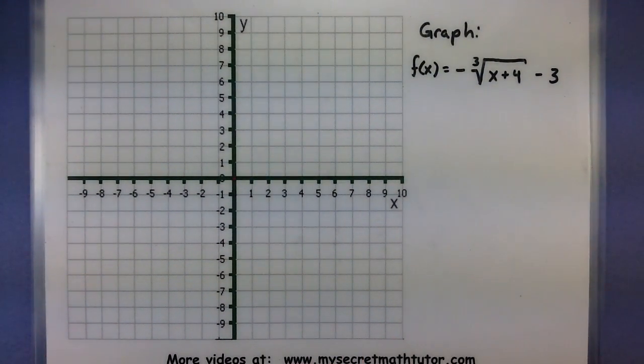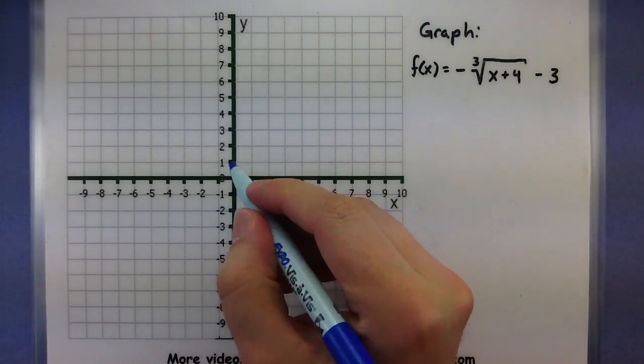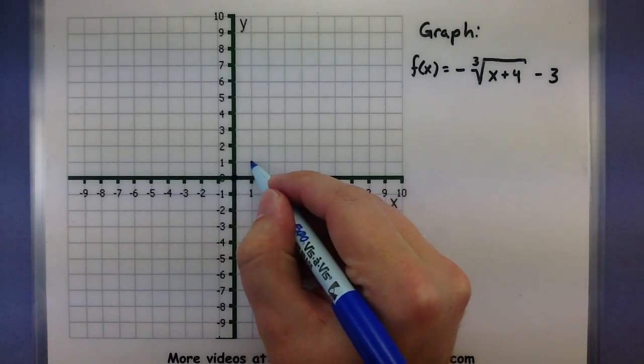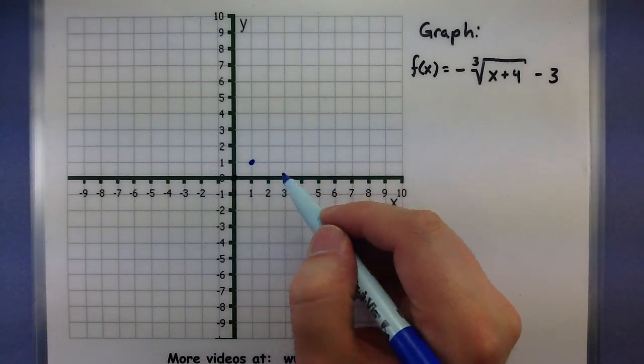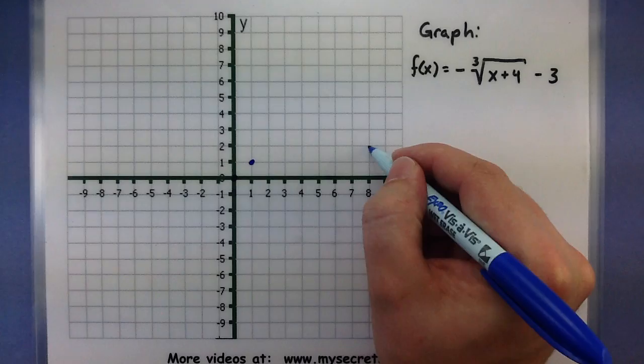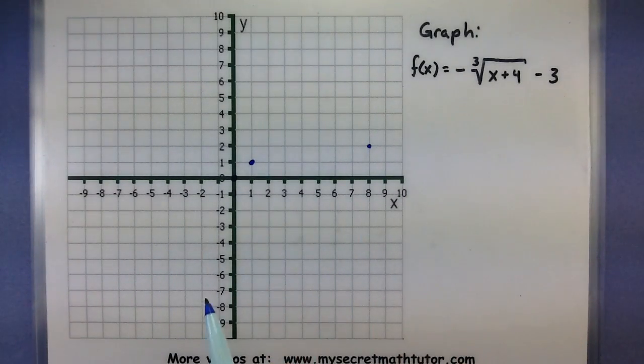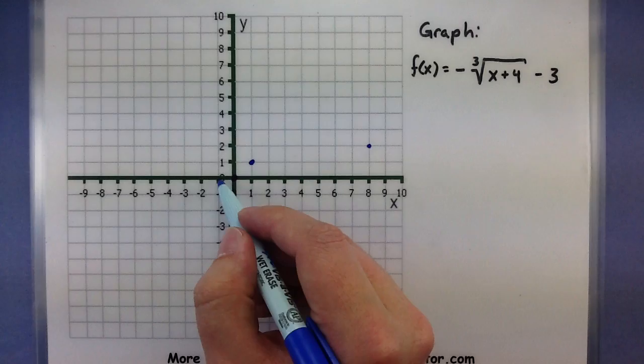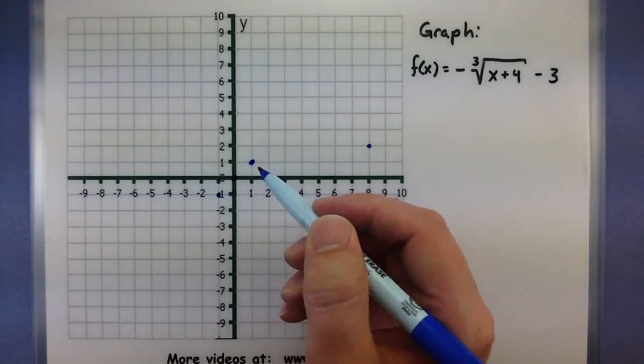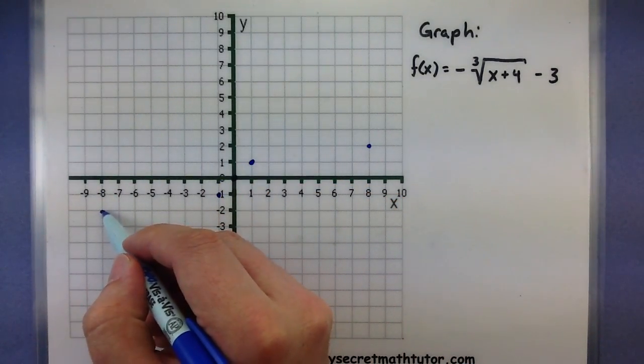For this next one we want to graph the negative cubed root of x plus 4 minus 3. So again let's start off with just graphing a cubed root so we can compare the two and how it changes. So this goes through (0,0), goes through (1,1). When I take the cubed root of 8 I get 2. And other values are off my chart here so let's go the other way. (-1,-1). (-8,-2). That would be down there.